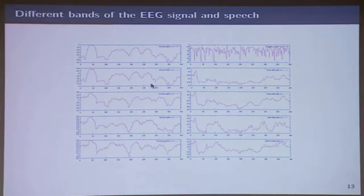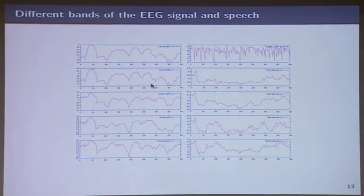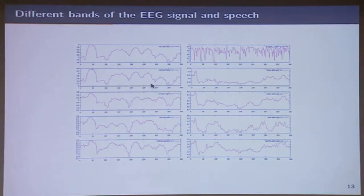The delta band actually corresponds to what we believe to be phrases in speech. The theta band is supposed to correspond to syllables. The beta band corresponds to phonemes in speech. But if you notice, the delta band actually dominates in all these signals. So after a lot of effort, we subtracted out the delta band from the beta bands, and then we started seeing syllable-like structure in the signal.